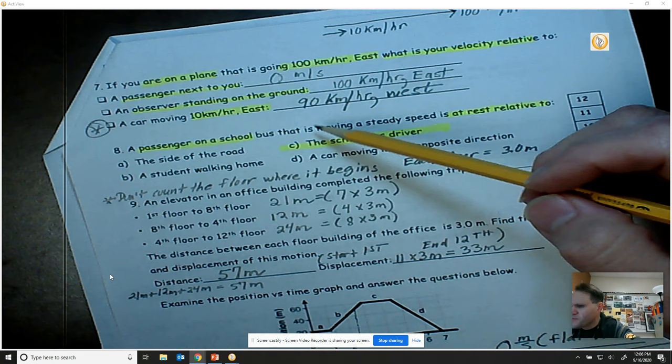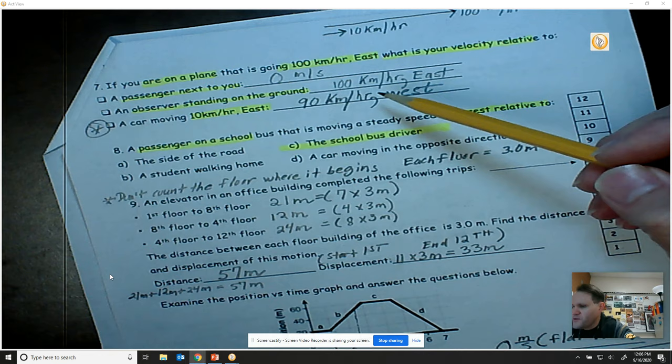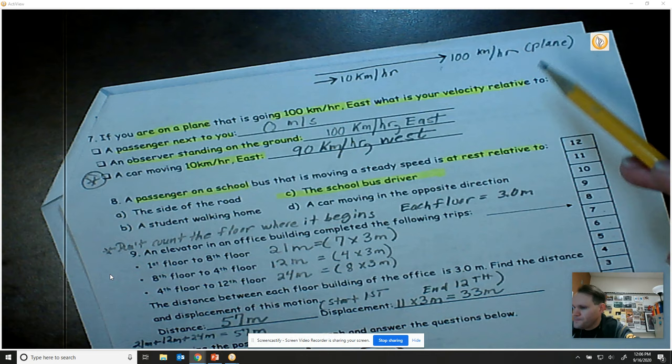What about an observer standing on the ground? If they're looking at the plane and you're on the plane, how fast do they see the plane going? Well, they see the plane going at 100 kilometers per hour, going to the east.